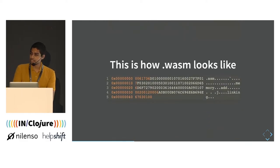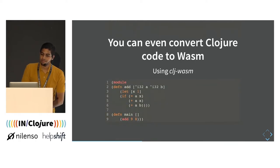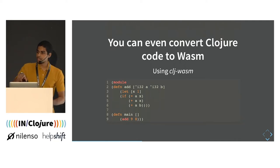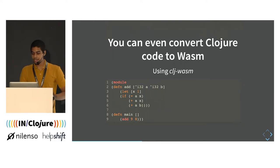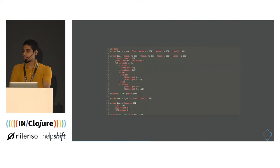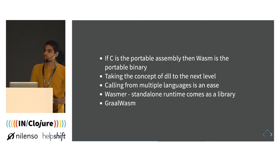The .wasm format is binary, so there's nothing human-readable to understand there. You can also convert ClojureScript code directly down to Wasm — you just need to add type annotations. You can use the CLJ-wasm library (though it may not be actively maintained) and compile down to Wasm, producing a .wat file. If C was known as the portable assembly, then Wasm is the portable binary.